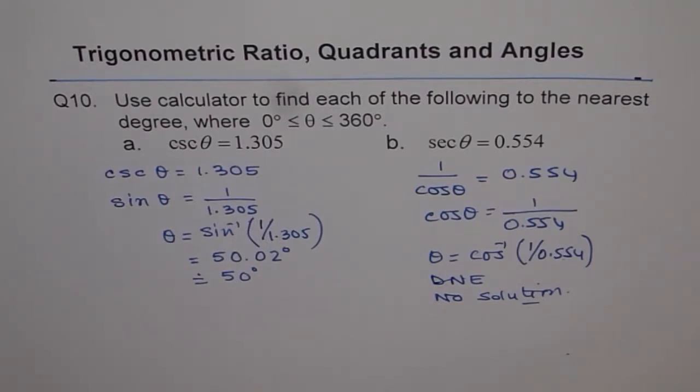So in most of the questions which you did, two things were very important. One, whenever coordinates of a point are given, you need to find the radius of the circle or the hypotenuse using Pythagorean theorem. x square plus y square equals r square or r equals square root of x square plus y square. First thing.